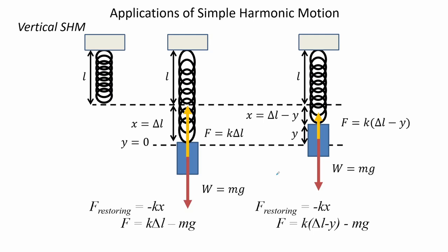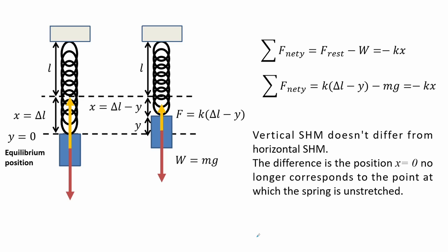Here we have a spring hanging from the ceiling. Without the mass it has length L; when the mass is added it stretches to length L plus delta L. We set the lowest stretched position as y equals zero. At a later time the block and spring oscillate, with length delta L minus y at that position. Writing restoring forces for both conditions, at y equals zero the force equals K times delta L minus the block's weight. At a later time it is K times delta L minus y, minus weight. Summing forces along the Y axis at the later time gives negative spring constant times displacement. Thus, vertical SHM does not differ from horizontal SHM, except that x equals zero no longer corresponds to the unstretched spring position.